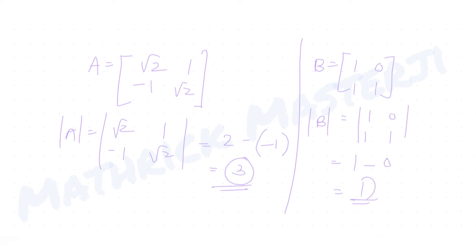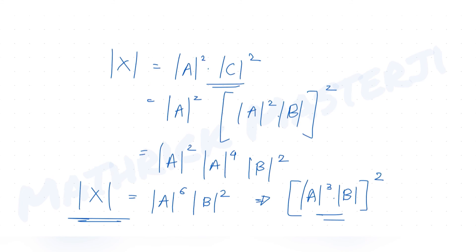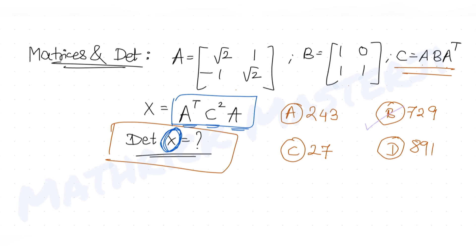With det(A) = 3 and det(B) = 1, we get det(X) = 3⁶ · 1² = (3³)² = 27² = 729. Looking at the answer choices, this matches option B. So B is the correct answer.